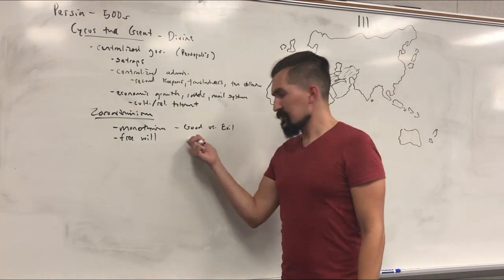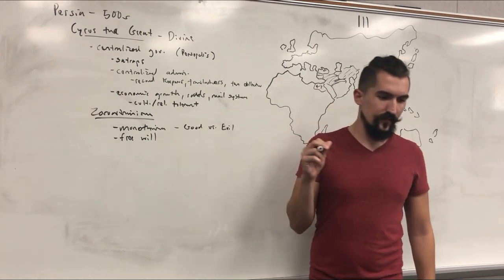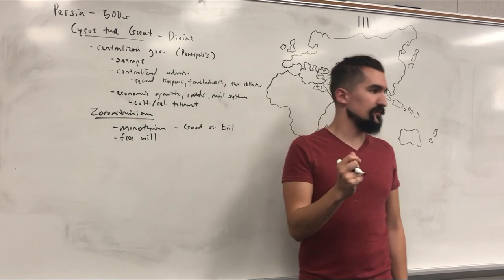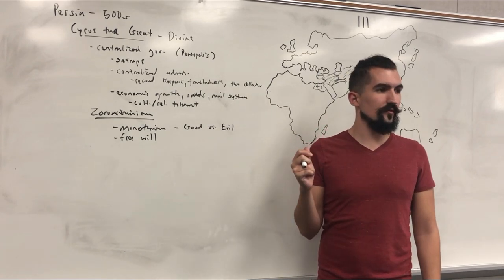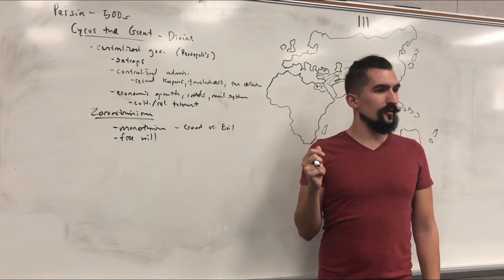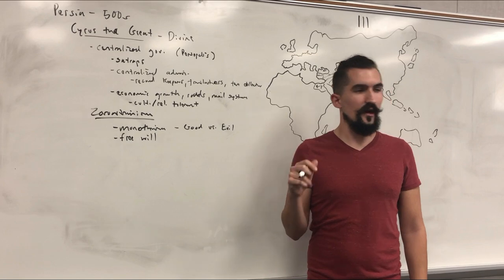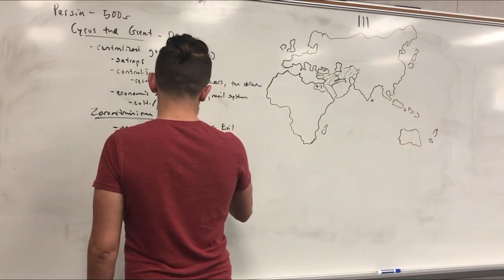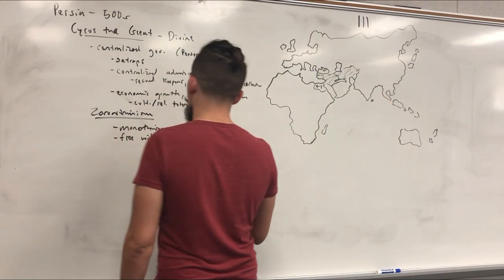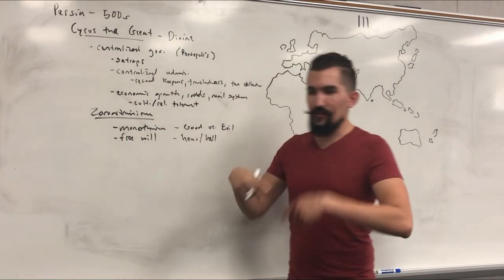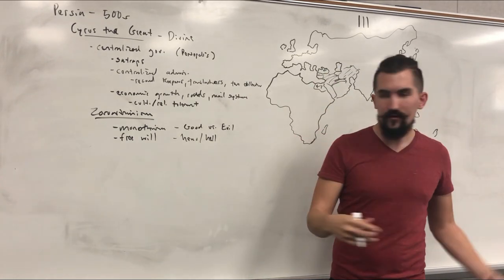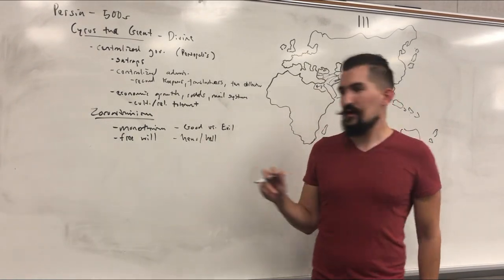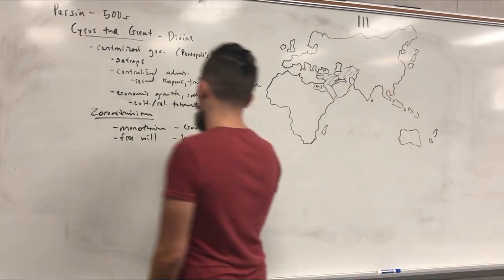You're not just a pawn of the gods — you actually have accountability for your decisions. They also believed there were consequences for your actions on Earth: heaven and hell. And lastly, there was somebody that was going to come later to tip the fight one way or the other — a Messiah.